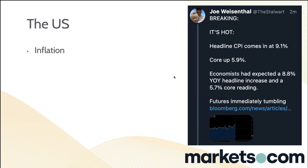Quickly on recession: the boffins would tell you it's a 40% or 50% chance. Technically, two negative quarters of GDP equals a recession. We've already had one in the US in Q1 — Q2 results will tell us more. Recession or not, it is tough out there. The only bright spot in the US economic data right now is jobs, which are still very strong.